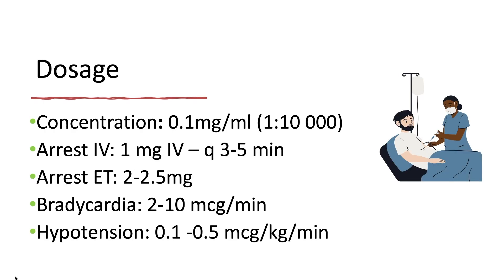For adult cardiac arrest, we administer 1 mg of the 0.1 mg per ml, or 1 in 10,000 concentration. We can repeat the dose every 3 to 5 minutes during resuscitation — for educational efficiency, we can give it every 4 minutes as a mid-range. Each dose should be followed with a 20 ml flush and elevation of the extremity.